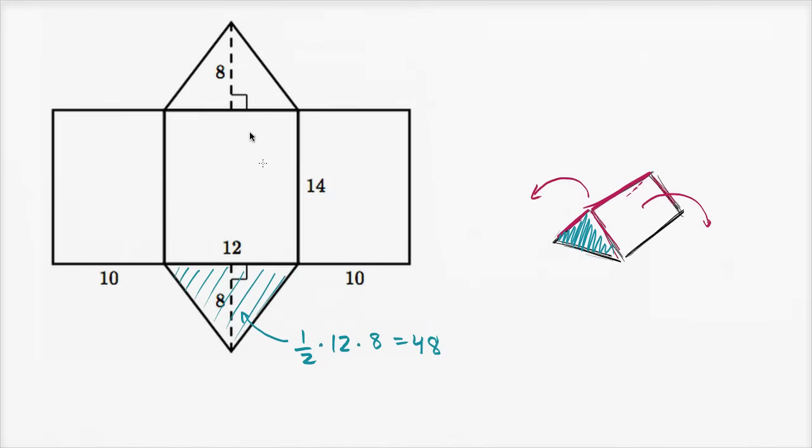And up here is the exact same thing. You can't see it in this figure, but if it was transparent, it would be this backside, right over here, and that's also going to be 48 square units.